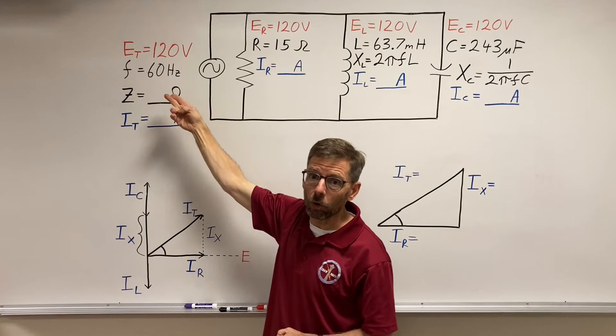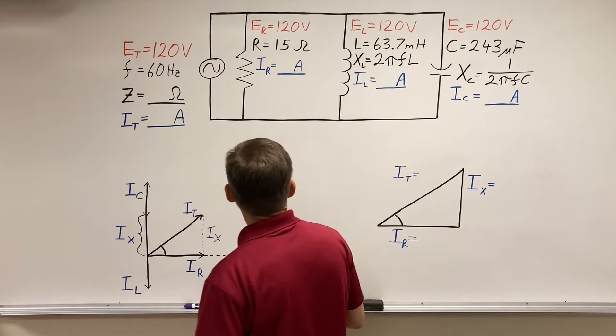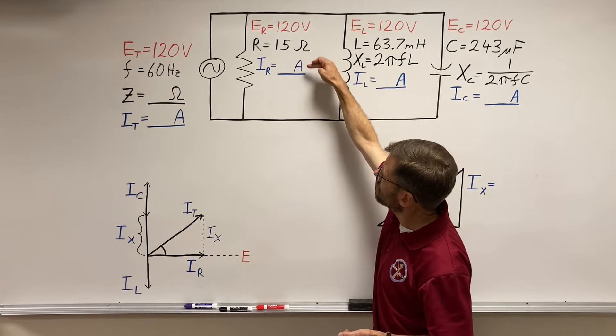So let's start right off. We can figure this out. 120 volts divided by 15 ohms, 8 amps.